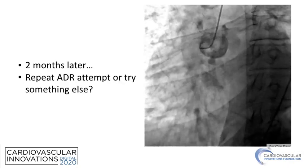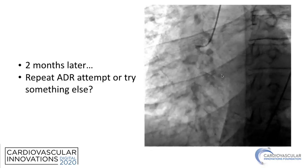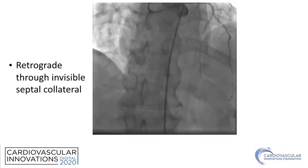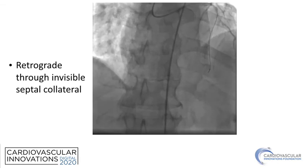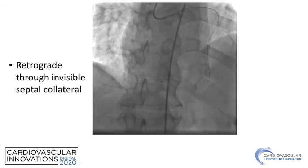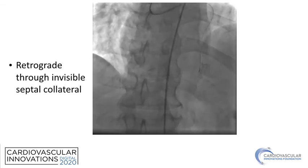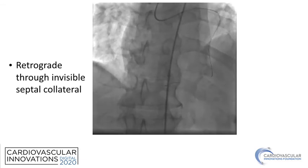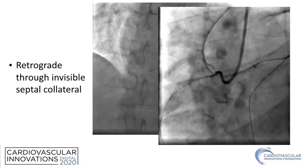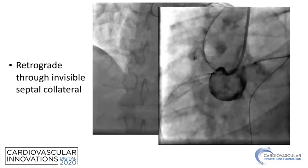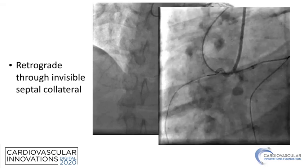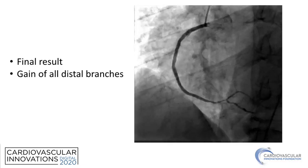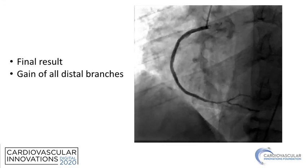Perhaps not surprisingly, at two months the vessel was completely occluded, which dictated our next approach. We decided to go retrograde right from the start. After surfing several septals, we found a connection and advanced the microcatheter to the distal RCA. The important point of this case is that from there on, it was very easy to advance the wire and microcatheter through the CTO segment, which had already been prepped by the original procedure. We took the microcatheter all the way back to the ostium, externalized the wire, and stented the vessel with very reasonable results, achieving much better outflow including a PDA and PLB.